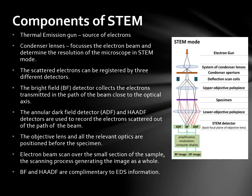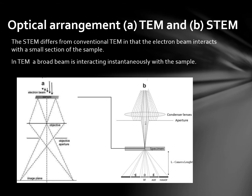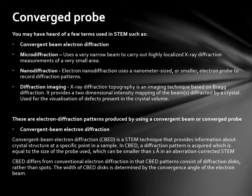Bright field and high angle annular dark field detectors are complementary to EDX information. The STEM differs from conventional TEM in that the electron beam interacts with a small section of the sample, whereas in TEM a broad beam is interacting instantaneously with the sample. You may have heard of a few terms used in STEM such as convergent beam electron diffraction, which we will discuss in a moment.